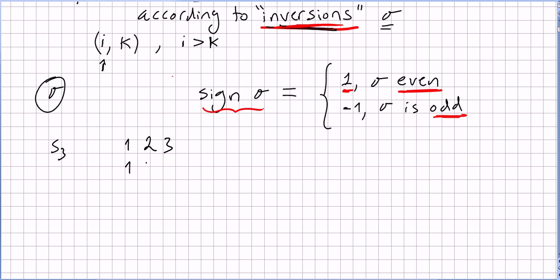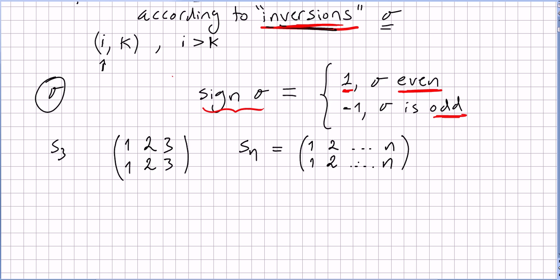For instance, let us pick f in S3: one two three, with one going to one, two going to two, and three going to three — that's the identity. For any n in Sn, if this is the identity, one goes to one, two goes to two, and n goes to n. So the identity permutation is always an even permutation with an even number of inversions, and the sign of the identity is always one.